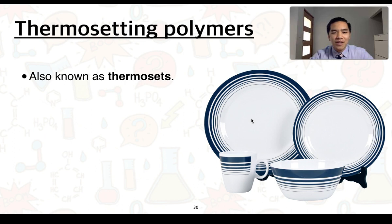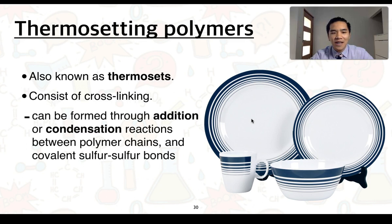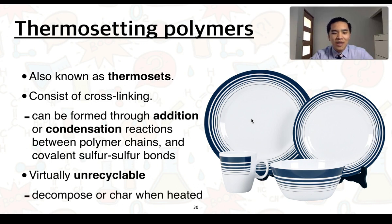Thermosetting polymers, or thermosets on the other hand, consist of a significant amount of cross-linking. This can be formed through addition or condensation reactions between polymer chains and covalent sulfur-to-sulfur bonds, like we saw with the vulcanised rubber. They are virtually unrecyclable, because when we apply heat they typically tend to decompose or char, through the breaking of covalent bonds — not necessarily just the cross-links, but also the covalent bonds within each of the polymer chains.